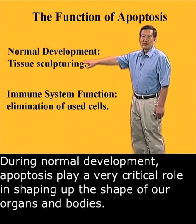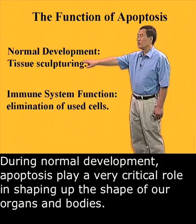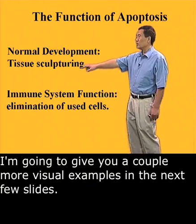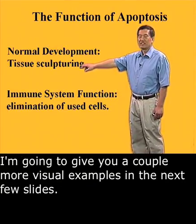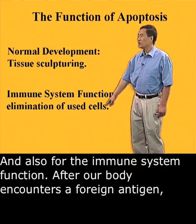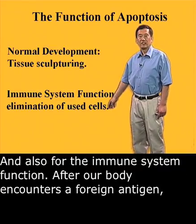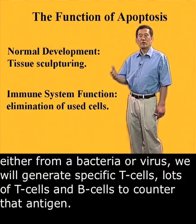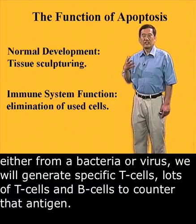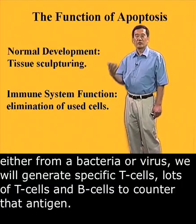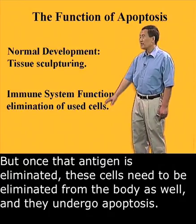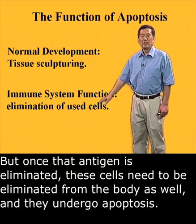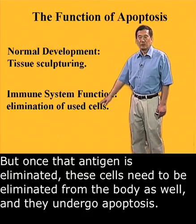During normal development, apoptosis plays a very critical role in shaping our organs and bodies — I'll give you a couple more visual examples in the next few slides. Also, for immune system function, after our body encounters a foreign antigen, either from bacteria or a virus, we will generate specific T cells and B cells to counter that antigen. But once that antigen is eliminated, these cells need to be eliminated from the body as well, and they undergo apoptosis.